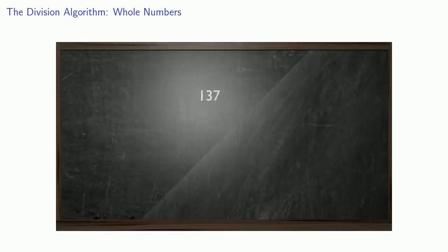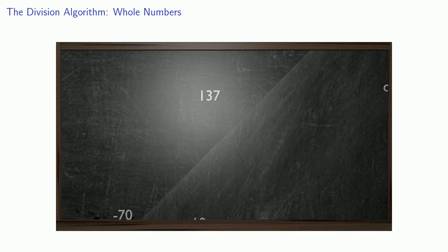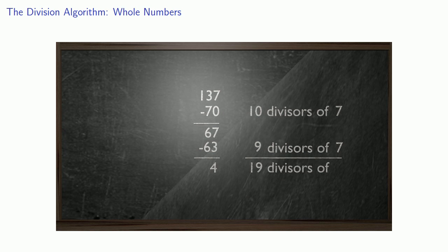If you're still watching, let's look at how this organization works. When we divide whole numbers, we organize our subtractions. So when we divided 137 by 7, we began by subtracting 10 divisors of 7, then we subtracted 9 divisors of 7. Altogether, we subtracted 19 divisors of 7 and had a remainder of 4.